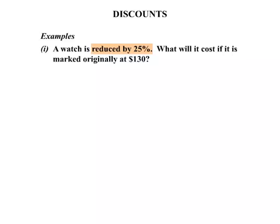Now let's consider this. If it's reduced by 25%, 25% off, that means you actually pay 75%. Think about that. If the total price is 100%, you take 25% off, you're paying 75% of the normal price.